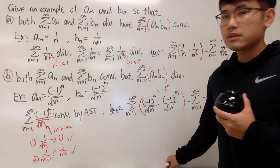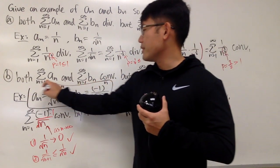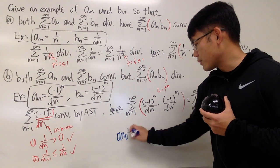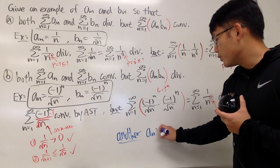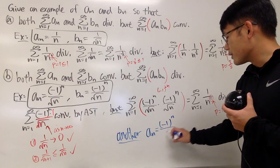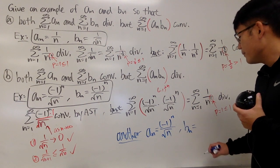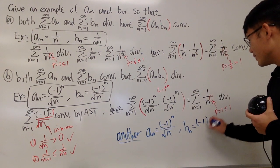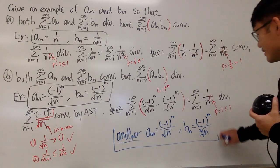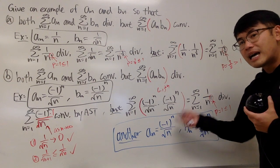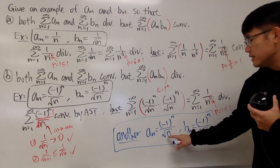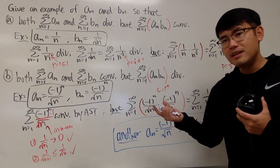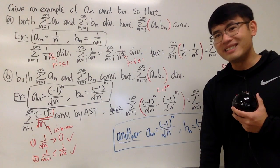For those who don't like that example because aₙ and bₙ are the same, here's another one. You can also take aₙ = negative 1 to the Nth power over square root of N, and bₙ = negative 1 to the Nth power over the cube root of N. When you multiply them, you get 1 on top, and on the bottom you have N to the 1/2 times N to the 1/3, giving N to the 5/6 power. Since p = 5/6 < 1, the product series diverges by the p-series test.